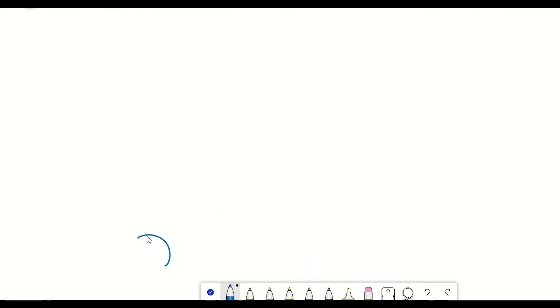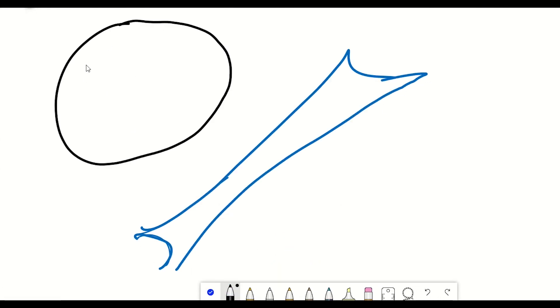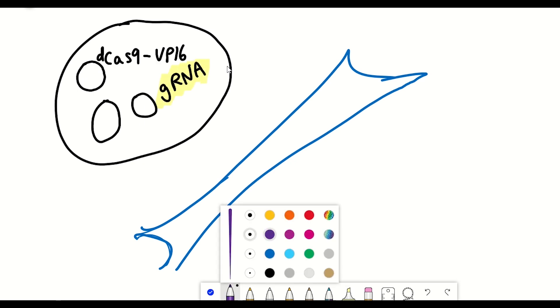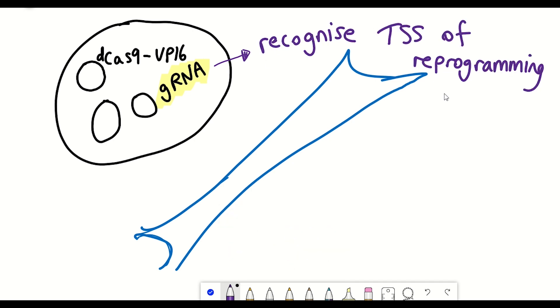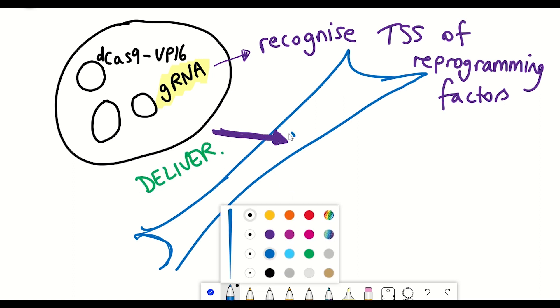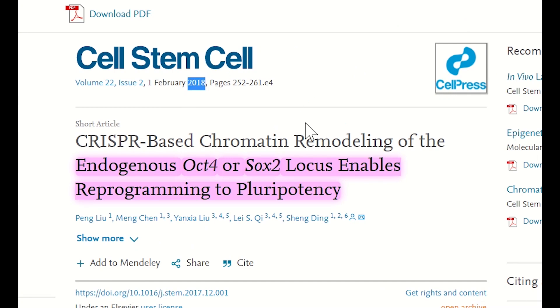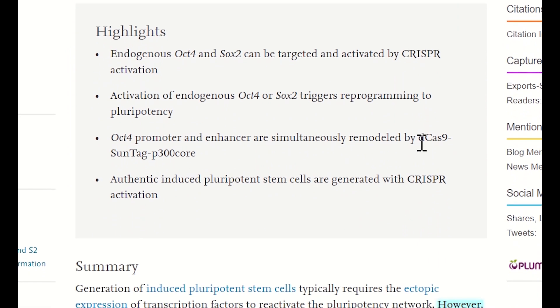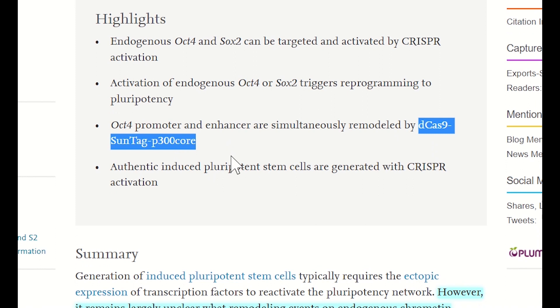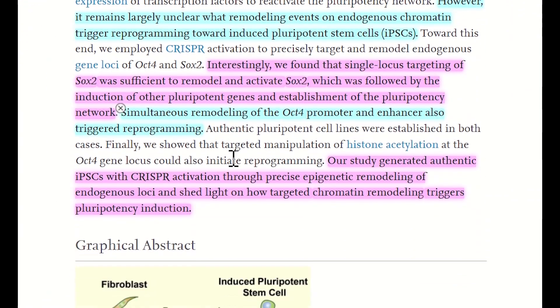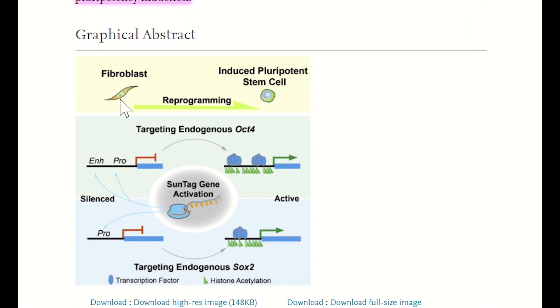And so the general theory behind these approaches is that instead of delivering the genes that encode the different transcription factors or other factors that can achieve the reprogramming, instead you supply the Cas9 complex along with the guide RNA to target them upstream of the different genes that encode these different reprogramming factors. For example, in this 2018 study, they used a variation of this CRISPR-Suntag approach to activate endogenous expression of OCT4 and SOX2, two Yamanaka factors, in mouse fibroblast cells to achieve reprogramming to pluripotency.